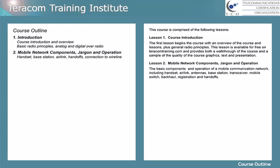Lesson two is mobile network components, jargon, and basic operation. This covers the basic components and operation of a mobile communication network, including the handset, air link, antennas, base station, transceiver, mobile switch, backhaul, registration, and handoffs.